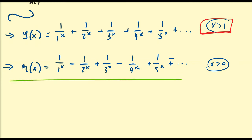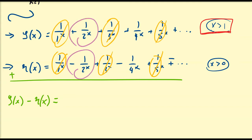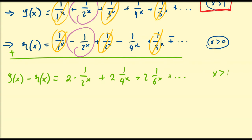We're going to subtract the two series. Computing zeta of x minus eta of x: the 1/1^x terms cancel, the 1/3^x terms cancel, and all odd terms cancel, leaving the even terms. Each even term contributes a factor of 2, giving us 2 times 1/2^x plus 2 times 1/4^x plus 2 times 1/6^x and so on. This holds when x is greater than 1.